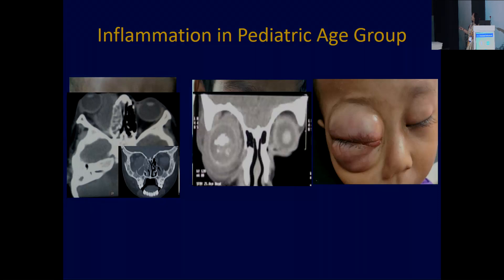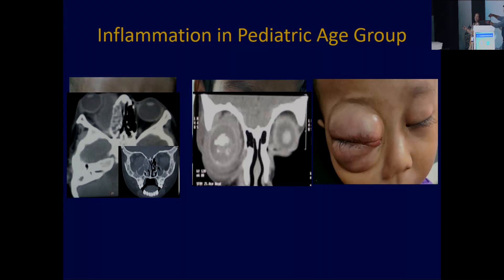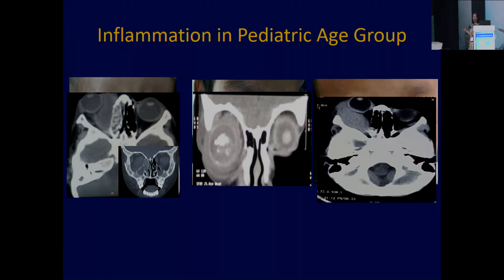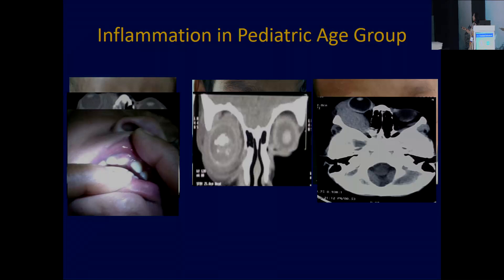A case of bilateral retinoblastoma. Sometimes the patient can come to you — a retinoblastoma patient — with a picture of orbital cellulitis. This can also come because the age group is almost similar, two to five years. All three can come with orbital cellulitis picture, and all these cases have been treated outside with a course of broad-spectrum antibiotic. In case of orbital cellulitis, you have to find out where is the source of infection — the tooth abscess.